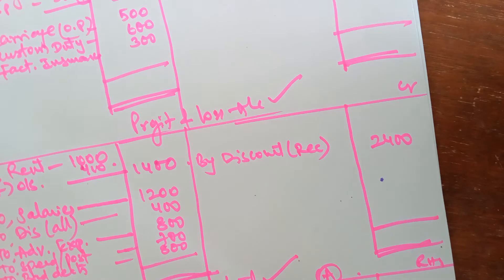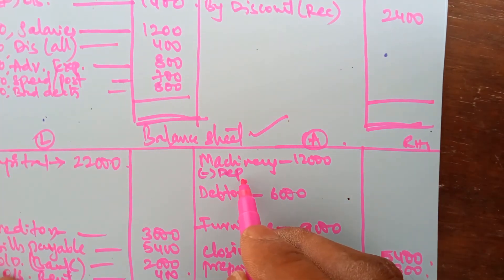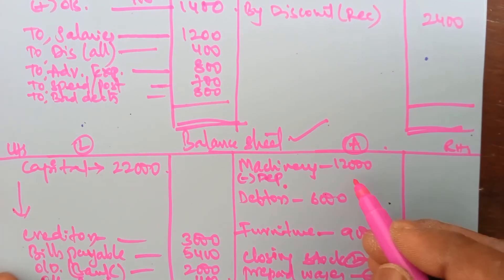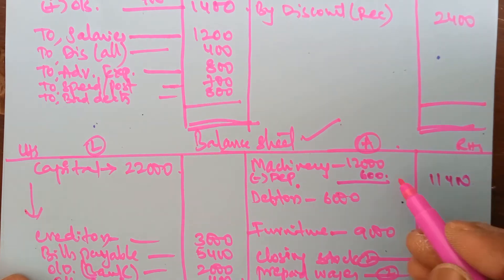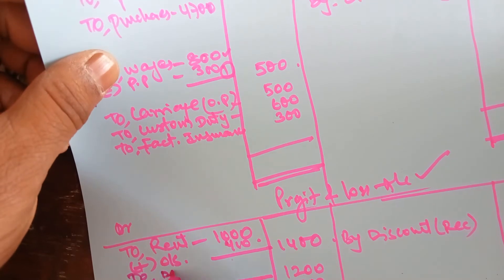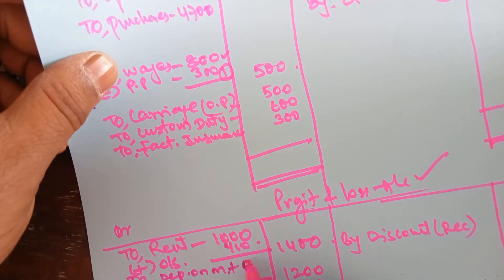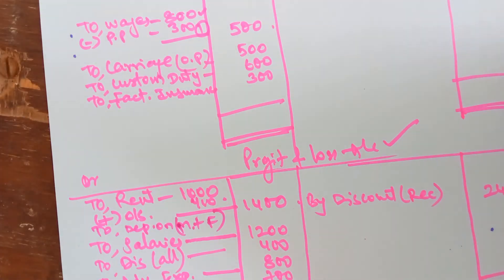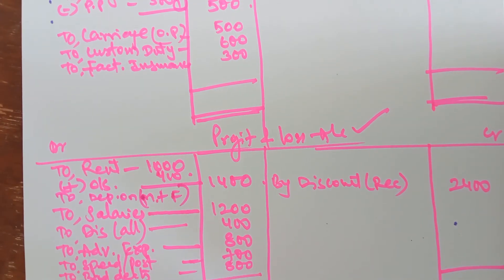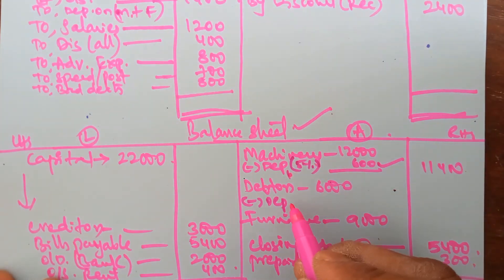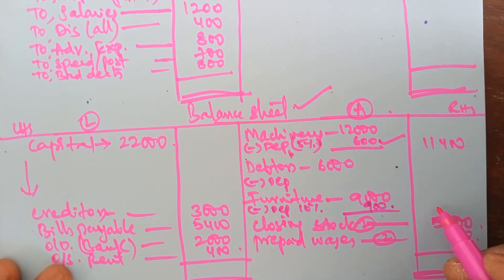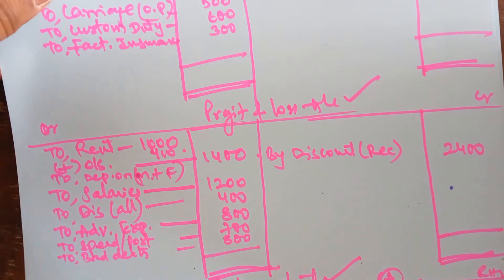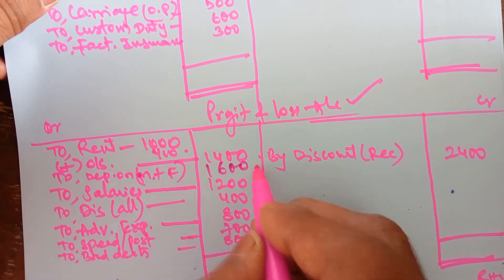Next is depreciation. Depreciation decreases the value of assets. First, deduct it from the concerned asset. Depreciation is 5% on machinery — 5% on 12,000 will be 600. Deduct 600; total value of machinery will be 11,400. Second time, depreciation should be shown as a loss in profit and loss account. On furniture, depreciation is 10%. 10% on 9,000 will be 900 — net value of furniture will be 8,100. Combined depreciation on machinery and furniture: 600 plus 1,000 becomes 1,600, shown as a loss.